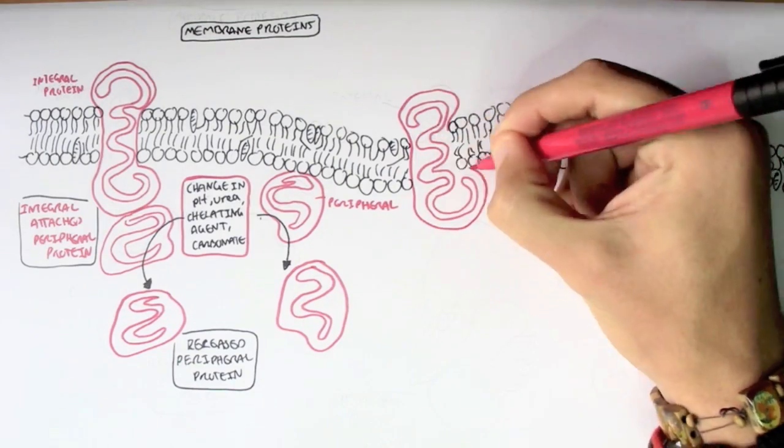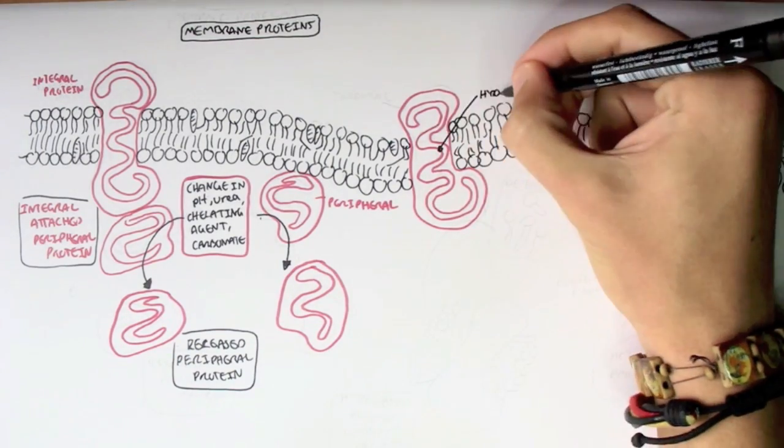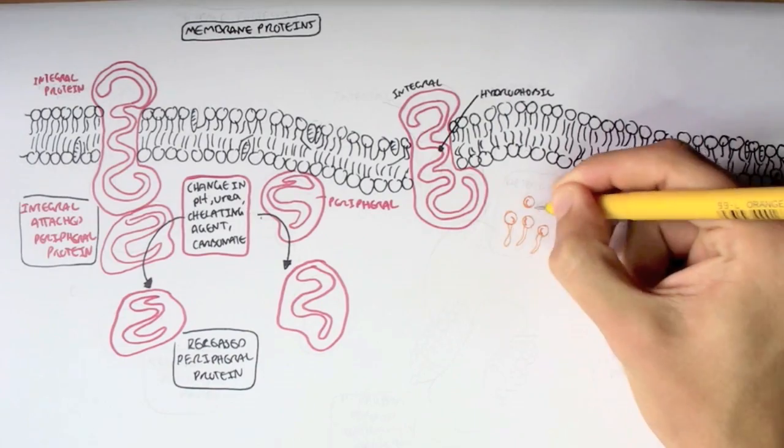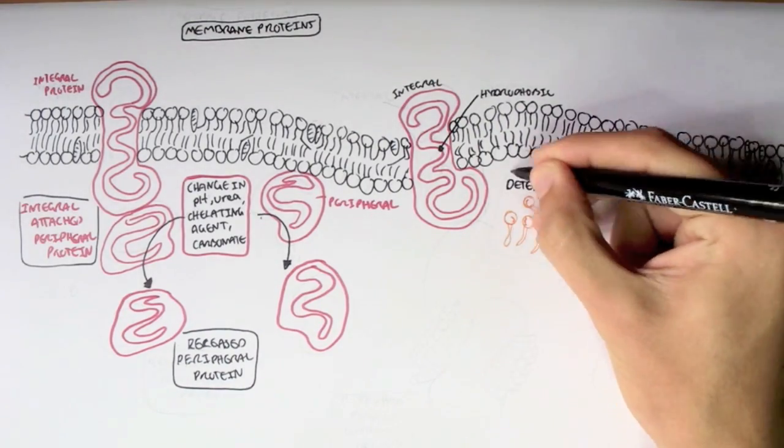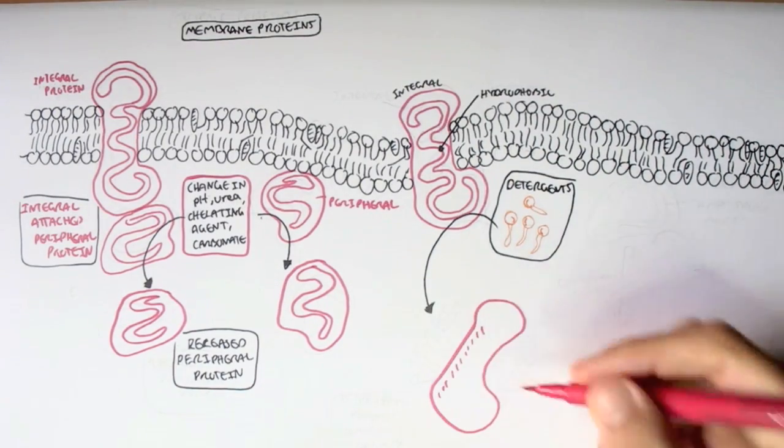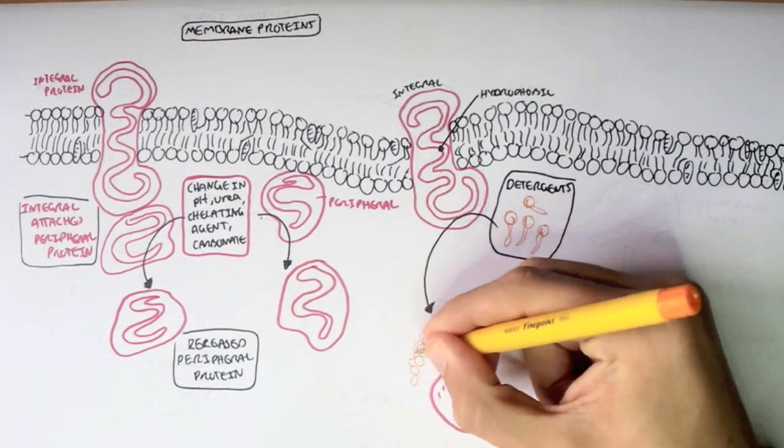Integral proteins respond to something else. Integral proteins are much more stable because they span the whole membrane and the hydrophobic region, as shown here, is embedded within the bilayer.